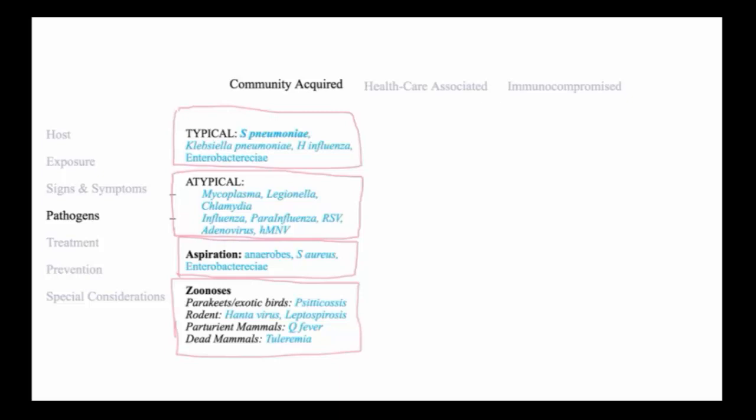Q fever results from exposure to parturient mammals, that is, animals that give birth where the organism is aerosolized from the placenta. Tularemia occurs with exposure to dead mammals. An outbreak of tularemia was recently observed in Nantucket, of all places, where the risk factor were people that had mowed their lawn. Presumably, through mowing the lawn, there were small pieces of animal carcass that were aerosolized that resulted in this infection.